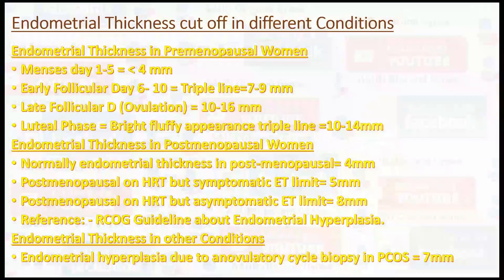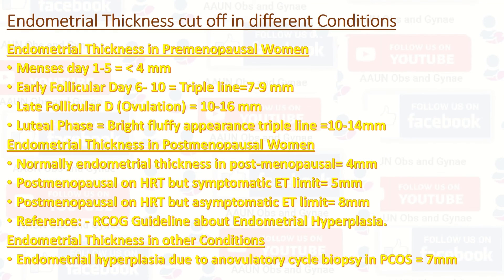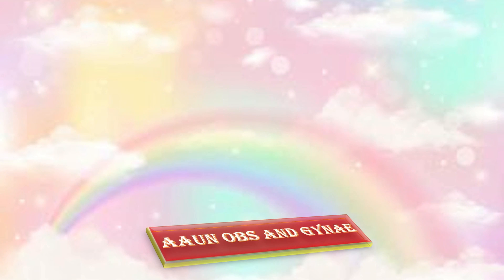Regarding endometrial thickness cutoffs: in pre-menopausal women, endometrial thickness depends on the phase of the menstrual cycle. In post-menopausal women, normal endometrial thickness is 4 mm — if more than 4 mm, endometrial biopsy is needed. If the patient is on HRT and symptomatic, the threshold is 5 mm or 4 mm per recent guidelines; if asymptomatic, the limit is 8 mm. In patients with PCOS, the endometrial thickness cutoff is 7 mm. Above all these levels, endometrial biopsy is required.